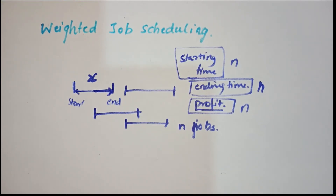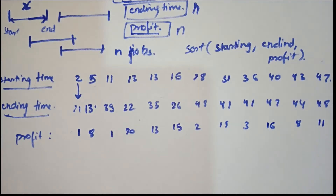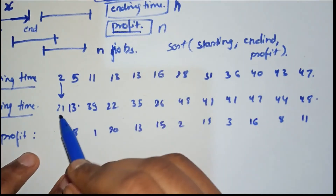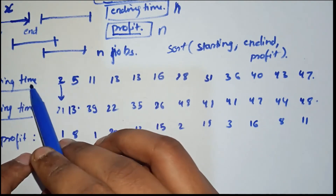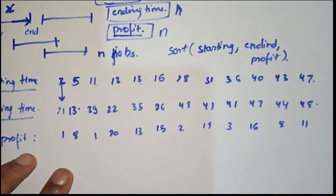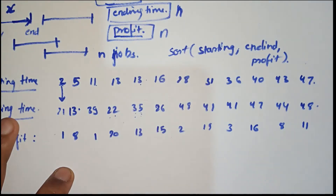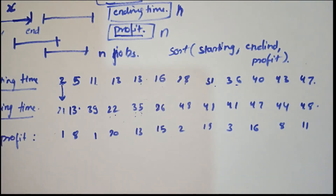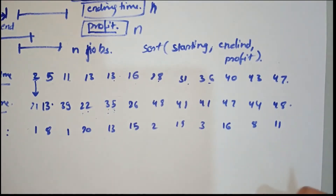We will be using both sorting and lower bound. Let me first tell you my approach using an example. Firstly we need to sort it. As you can see here it is sorted according to starting time and then ending time — like 2, 5, 11, 13, 13. Here both are 13, so I sorted by ending time: 22, 35, 16, 28, 31, 36, 40, 43, 47.